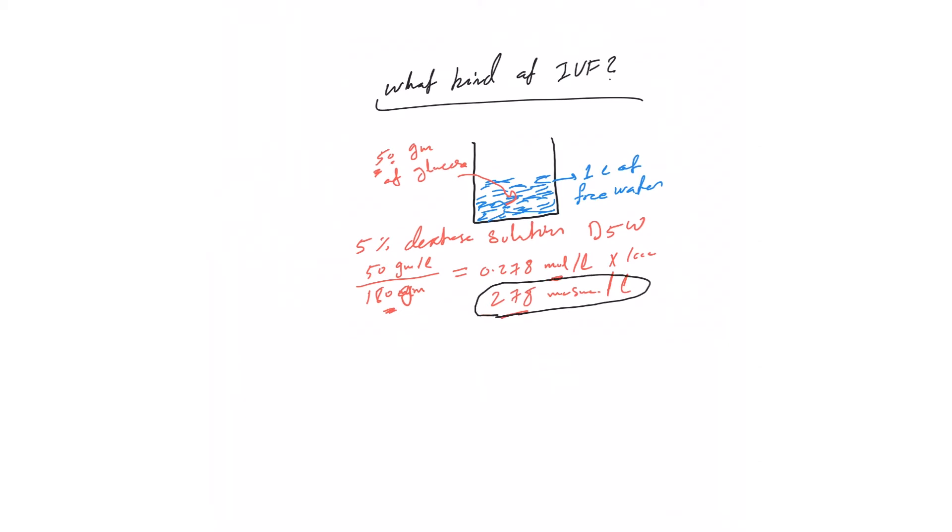Which is pretty isotonic - it makes it pretty isotonic solution, because the tonicity of the D5W is very close to the body's osmolarity. So that may make us a little bit confused, because some of us say no, D5W is similar to free water. You will give it to treat hypernatremia, and this is true.